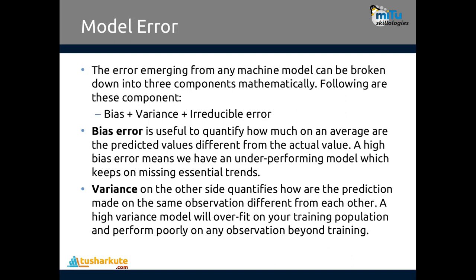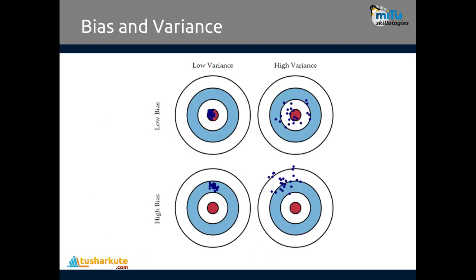We talked about bias and variance in the first slide — these are called errors. The error from any machine learning model can be broken down into three components: bias, variance, and irreducible error. Bias error quantifies how much, on average, predicted values differ from actual values — what we measure as mean absolute error in regression. A high bias error means the model is underperforming and keeps missing essential trends.